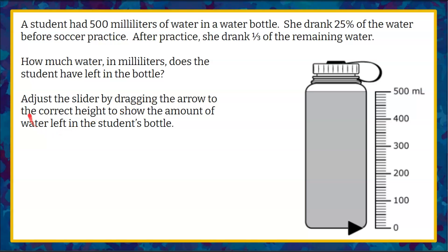Now, if we were on a computer, we would adjust the slider by dragging the arrow to the correct height to show the amount of water left in the student's bottle. So here is that slider, but neither you or I am on a computer here, so we're going to have to do it. I'll do mine in color. You're going to do yours with pencil at home.